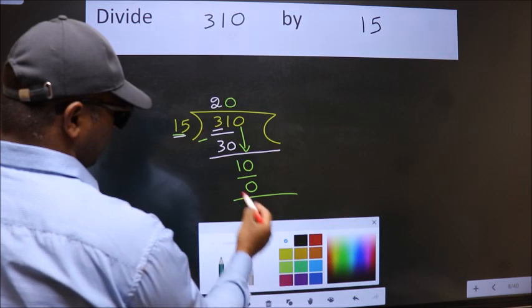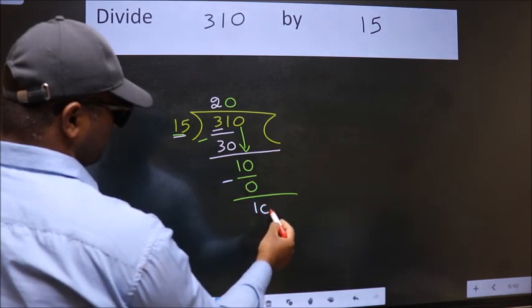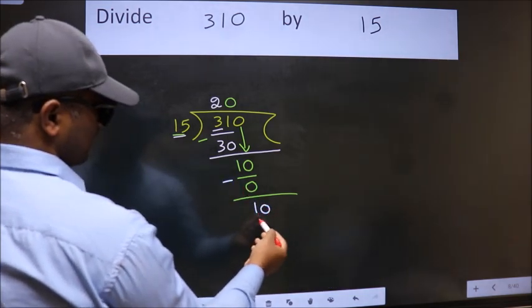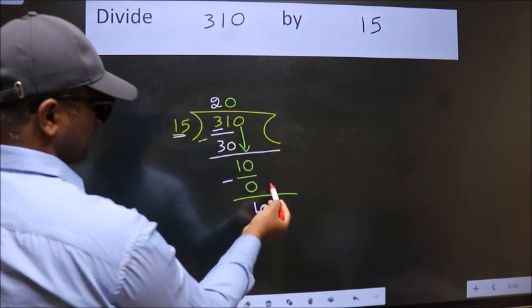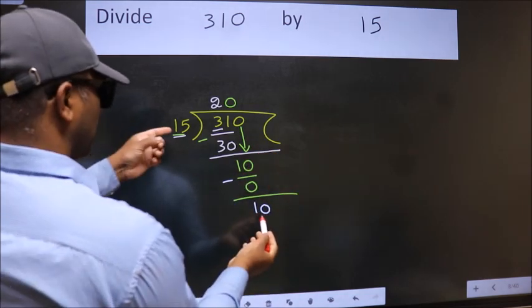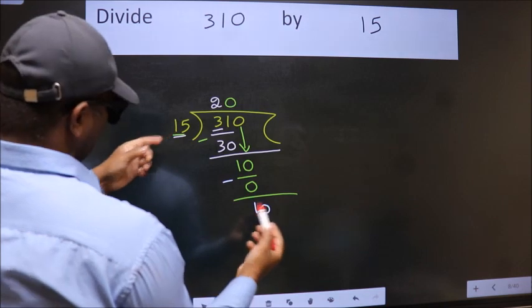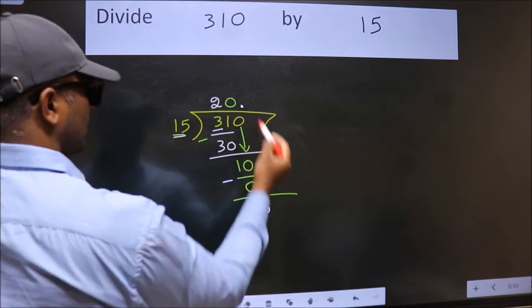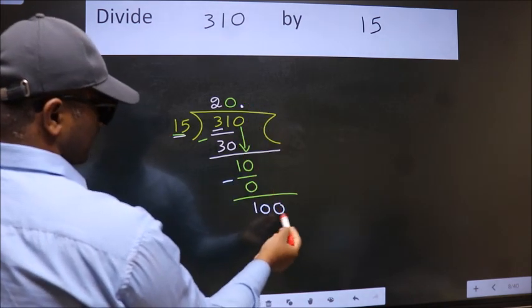Now we subtract. We get 10 over here. Over here, we did not bring any number down, and 10 smaller than 15. So now we can put dot and take 0. So, 100.